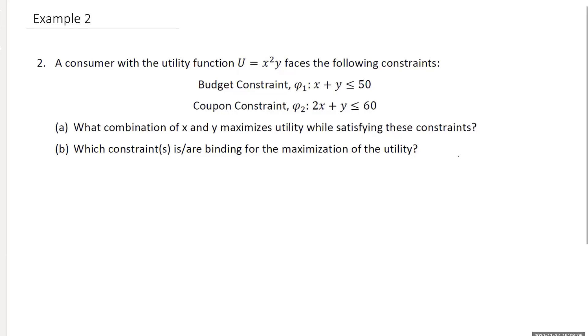A consumer with the utility function u equals x squared y faces the following constraints. We have constraint 1, x plus y is less than or equal to 50. Constraint 2, 2x plus y is less than or equal to 60.